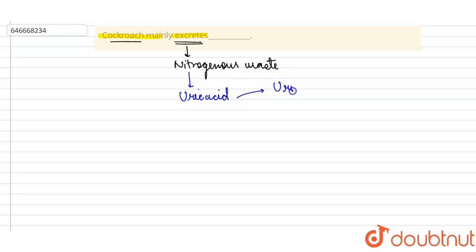It will follow this uricotelic mode of excretion, so it shows this uricotelic excretion. We know that here it will excrete this uric acid, and animals release this uric acid.